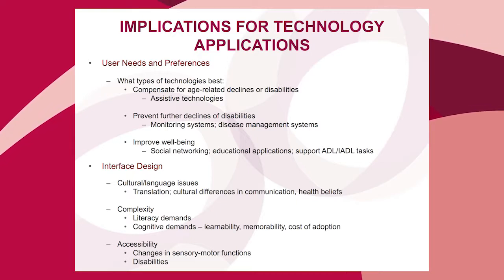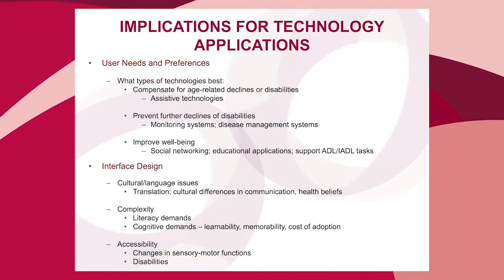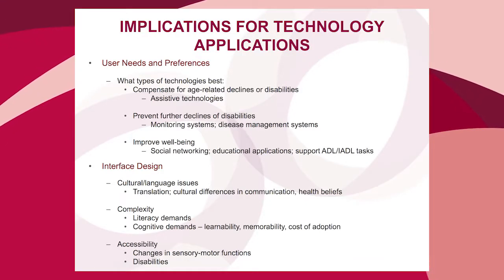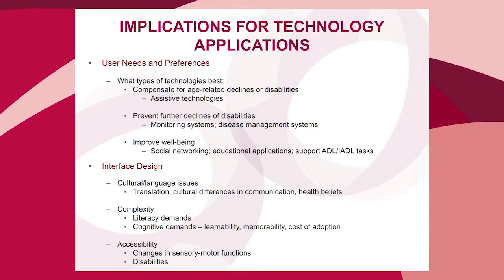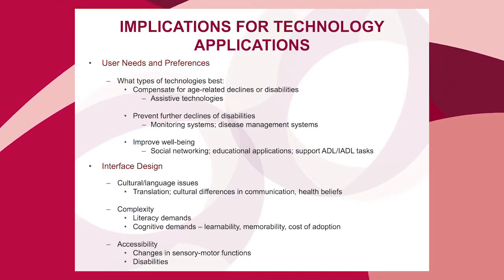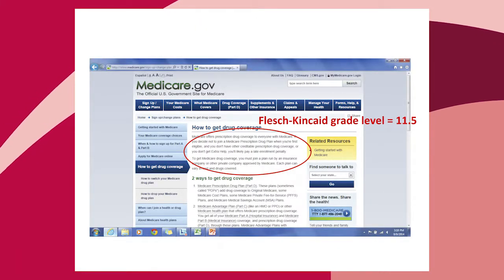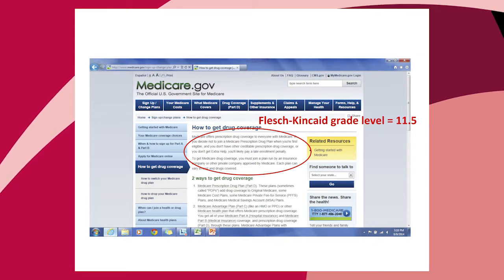There are many accessibility issues. We have to compensate for changes in sensory and motor functions and for all of the chronic impairments and disabilities an older person may have. Just to illustrate the importance of this and how it's often not thought about, here are a couple of slides.